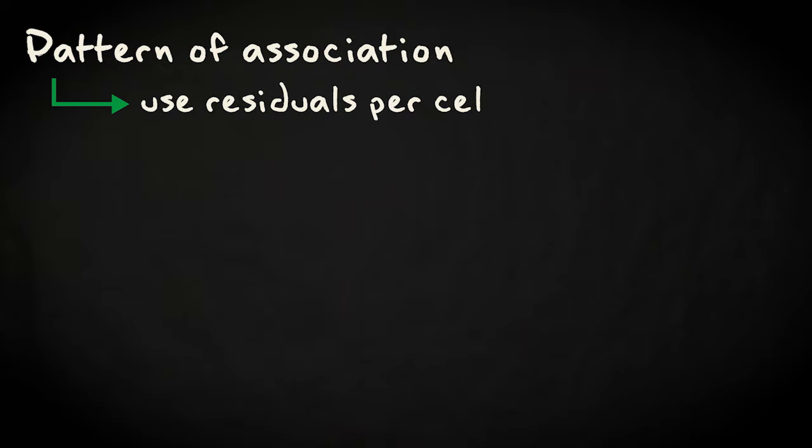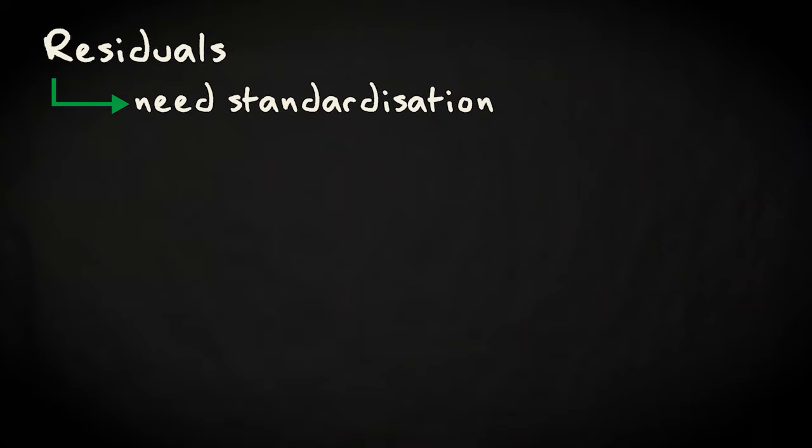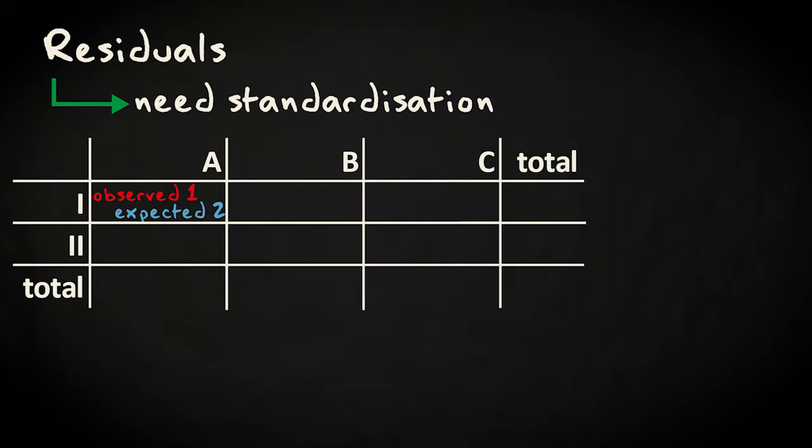The residuals per cell are the difference between the observed and expected frequencies. However, these have to be standardized somehow, because the residual of 1 in a cell with an expected value of 2 is a lot bigger relatively than the residual of 1 with an expected value of 200.